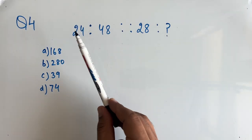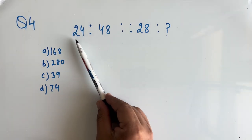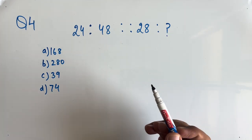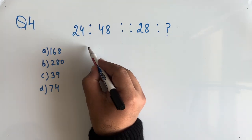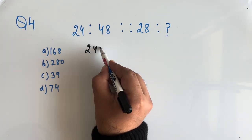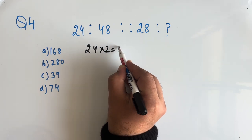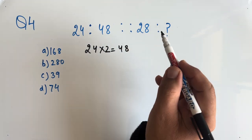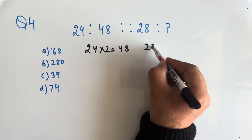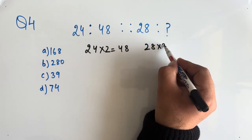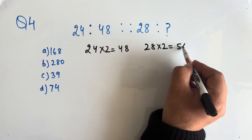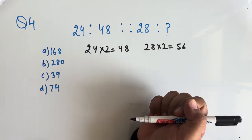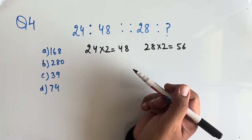Now question number 4: 24 is to 48, what is 28 is to? Now if we multiply 24 by 2, we get 48. In the similar way, if we multiply 28 by 2, we get 56. But 56 is not in the option, so we will try another way.